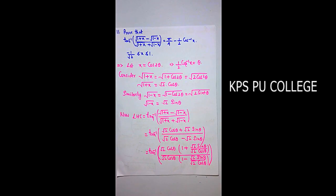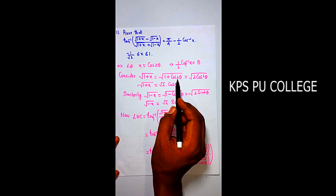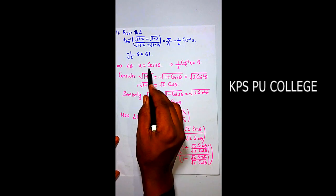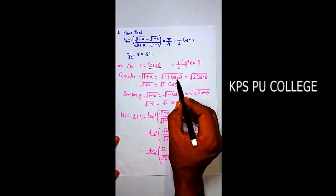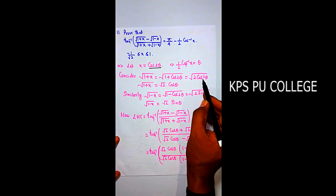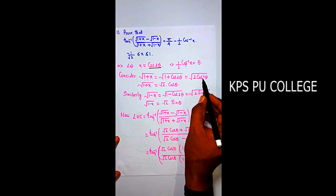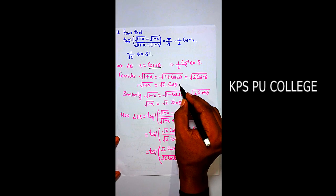From x = cos(2θ), cos⁻¹(x) = 2θ, so θ = ½cos⁻¹(x). Now, √(1+x) = √(1+cos2θ) = √(2cos²θ), so square root of square cancels and we get √2·cosθ.